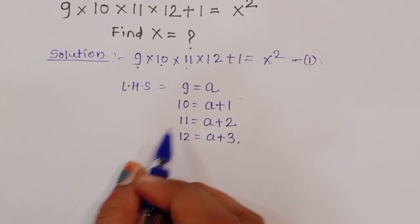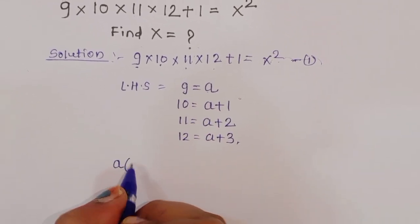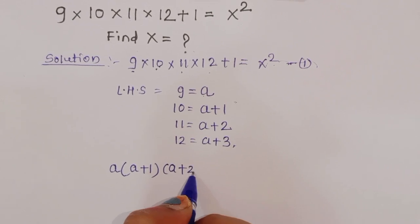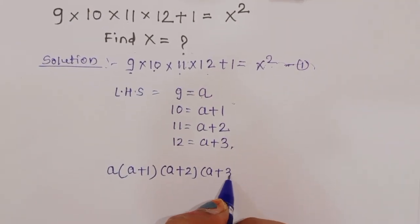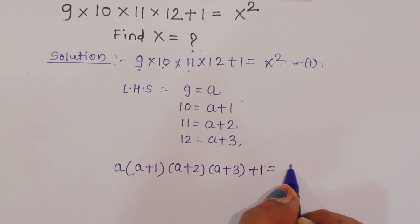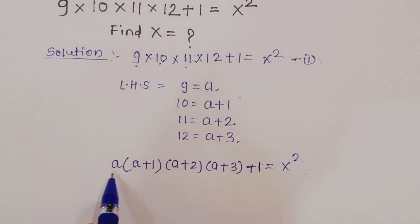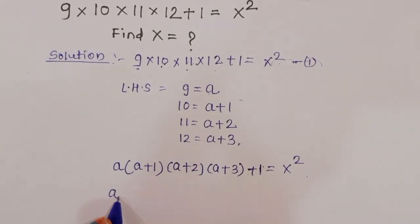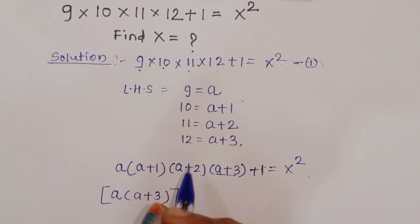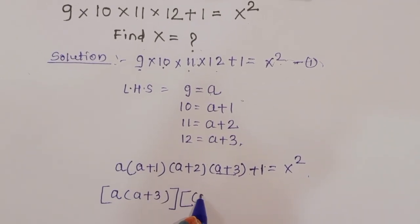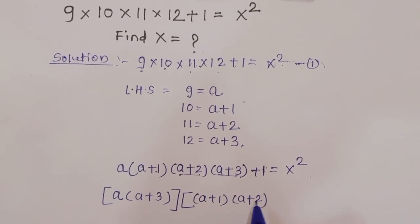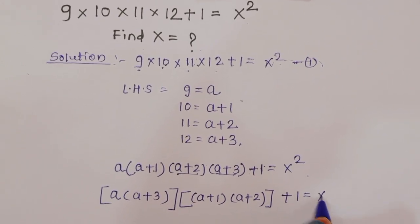We get a times (a plus 1) times (a plus 2) times (a plus 3) plus 1 is equal to x squared. Now arranging the terms, we pair a with (a plus 3) and (a plus 1) with (a plus 2).